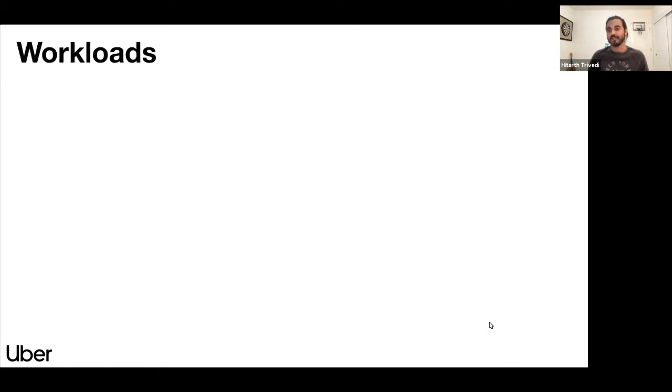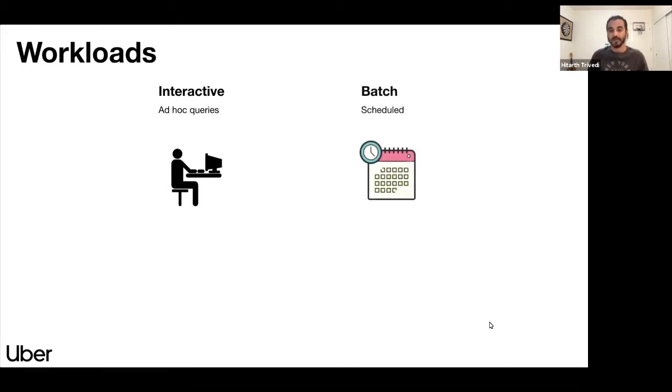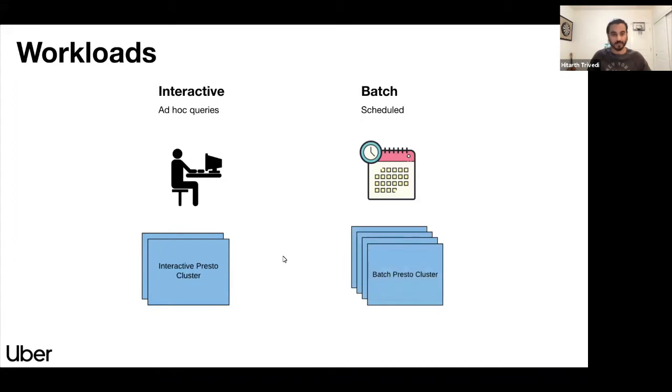At Uber, we differentiate all the queries into two specific types of workload. The first type of workload, we call it interactive. This workload includes ad hoc queries. So users coming to a particular service and running ad hoc queries. Then there is another set of queries. We call it batch. These are scheduled queries or queries coming from specific services in a scheduled manner. So what we have done is we have pre-configured our Presto clusters for a specific type of workload. So for interactive workload, we have interactive Presto cluster and for batch workload, we have batch Presto clusters.